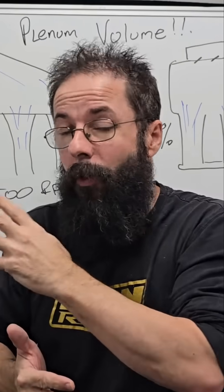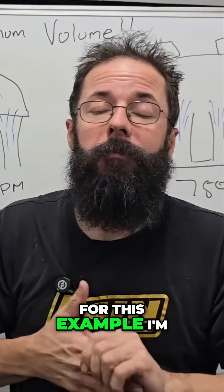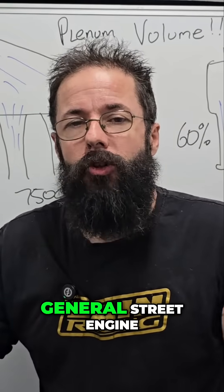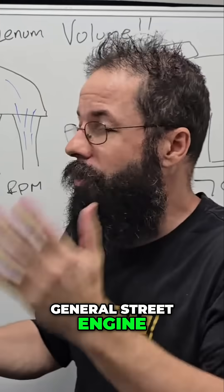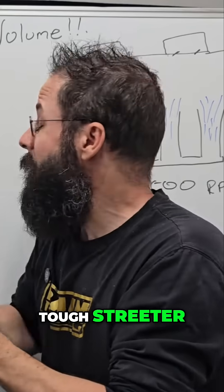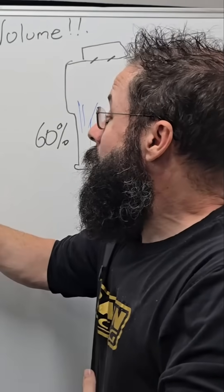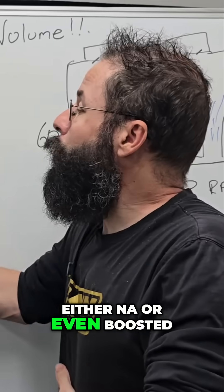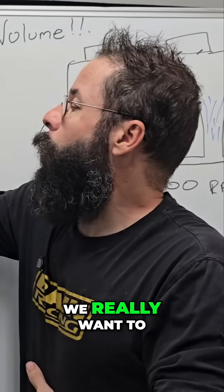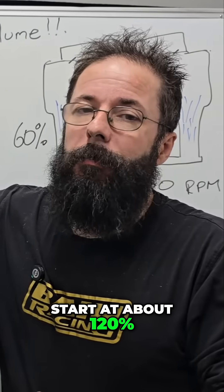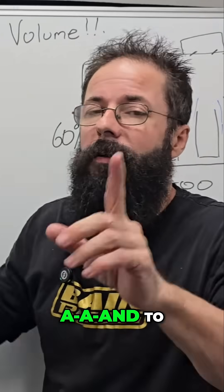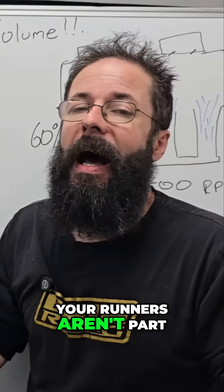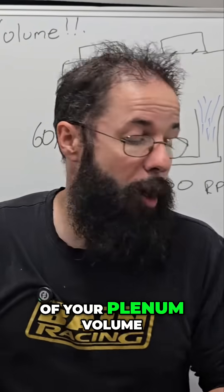For this example I'm using 7,500 RPM — a general street engine or tough streeter. Something like this, either NA or even boosted, we really want to start at about 120%. And to clarify, your runners aren't part of your plenum volume.